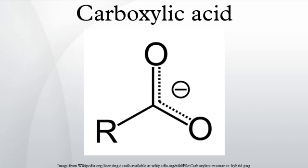Carbonation of Grignard and organolithium reagents: RLi + CO₂ → RCO₂Li; RCO₂Li + HCl → RCO₂H + LiCl. Halogenation followed by hydrolysis of methyl ketones in the haloform reaction. The Kolbe–Schmidt reaction provides a route to salicylic acid, a precursor to aspirin.